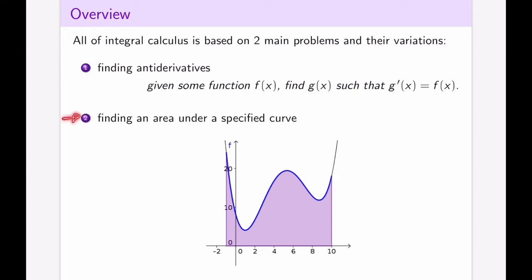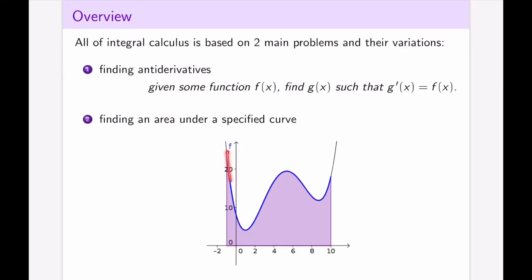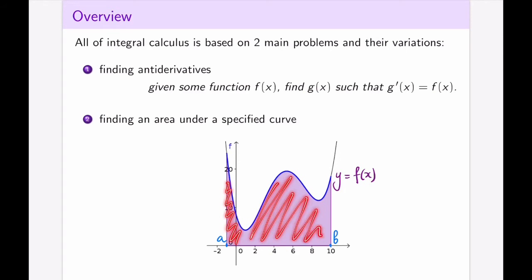The second problem is closely related to the first one, although not obviously so: finding the area under a specified curve. So if I give you a specific function, let's call it y equals f of x, and some two boundary points, let's call them a and b, the problem is to find the area above the x-axis and below the curve — the area that is shaded in purple here. In this course, we will focus on problem 2 first and then come back to discuss how it relates to problem 1 and how the two connect together.